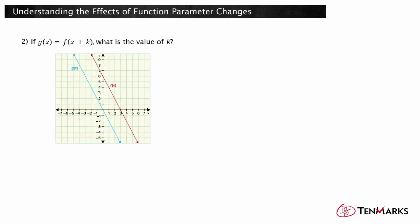Let's look at another example. If g of x equals f of the quantity x plus k, what is the value of k? K is added to the x value, so you are looking for a horizontal translation. How far did each point in f of x shift horizontally? Each point shifted 3 units to the left. In a horizontal translation, positive k values shift to the left, so k must be positive 3. g of x is equal to f of the quantity x plus 3.